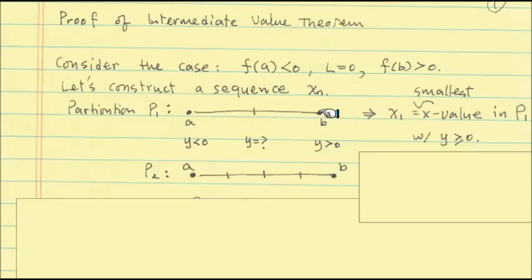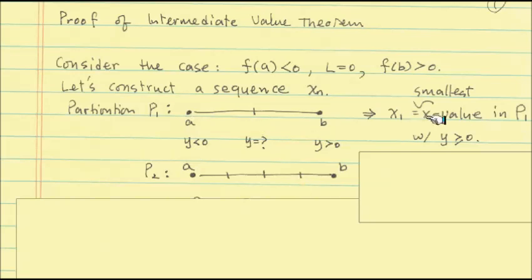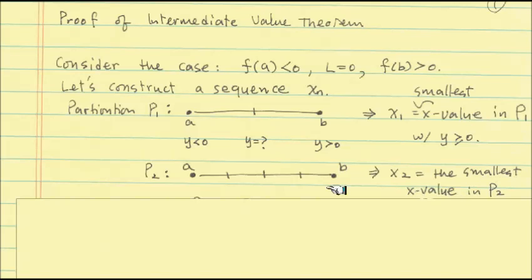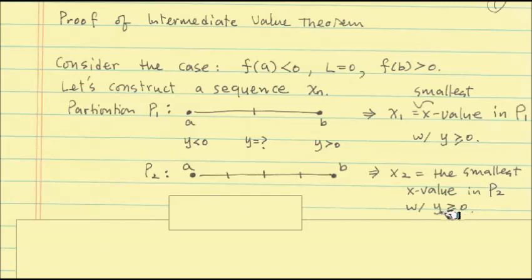The next step is to keep these three points and divide each of the two sub-intervals into two more pieces. Now we have five points. x_1 is either the second or third of these five, and we know it is the point that is the first in those three points such that the y value is positive. So what will x_2 be? x_2 is the smallest value among these five points — that is called P2, a partition with five division points — such that the y value is positive.